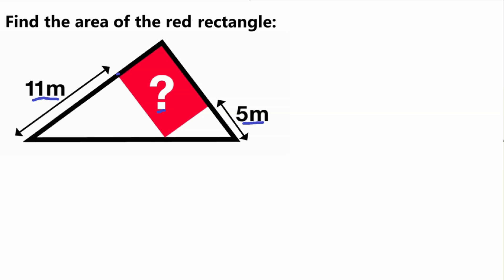So let's go ahead and get started. We've got the numbers 11 and 5, but what else do we know? Well, we know that this is a rectangle, which means its four angles are each 90 degrees — so this angle here is 90 degrees.